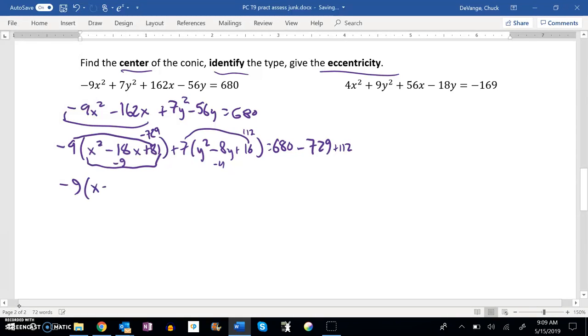So let me think about this. This factors down to x minus 9 squared. This factors down to y minus 4 squared. 680 minus 729 plus 112 is 64.